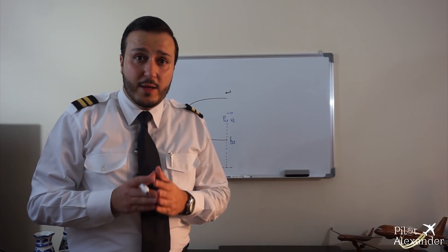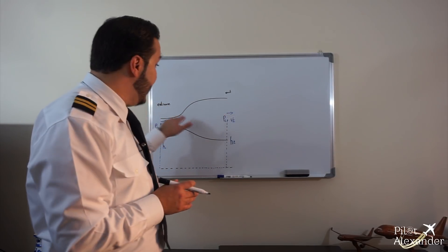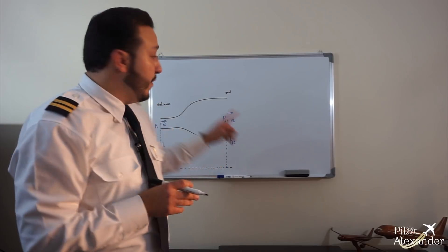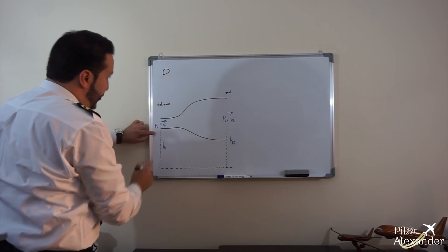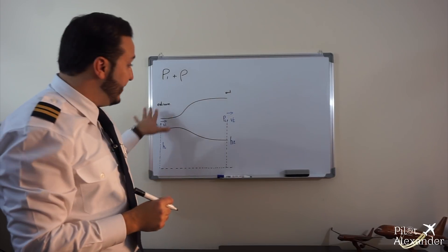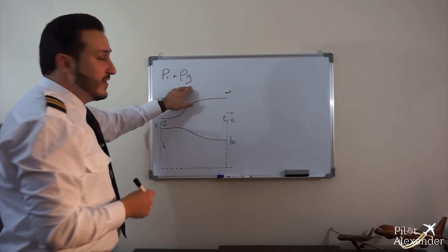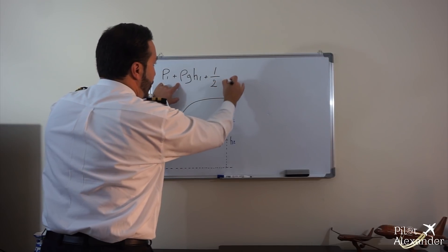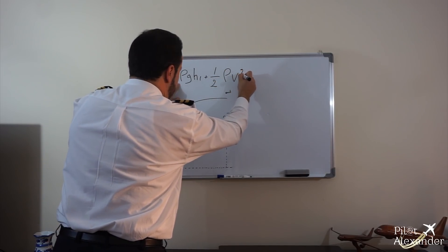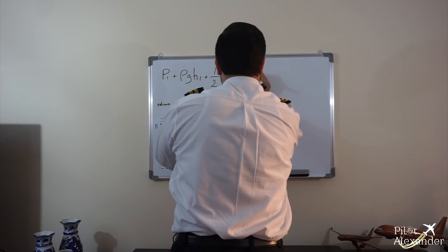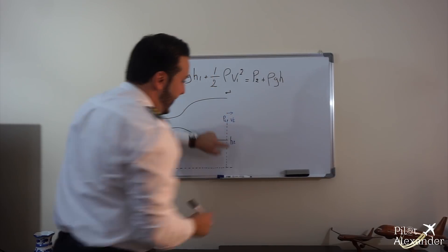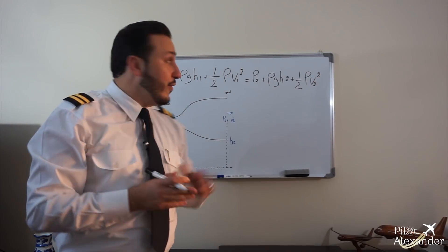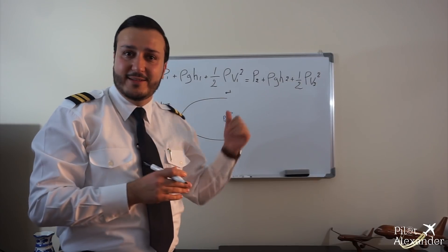For those who like mathematics, here is Bernoulli's equation applied to this specific example. Pressure at position 1, plus rho times g times h at position 1, plus one-half of rho times velocity squared at position 1, equals pressure at position 2, plus rho times g times h at position 2, plus one-half of rho times velocity squared at position 2. The fluid density rho and gravitational acceleration g remain constant throughout. This is the exact equation — please dig into it, it is very interesting to know.